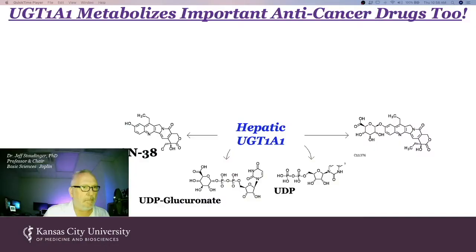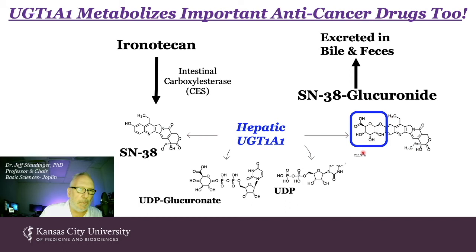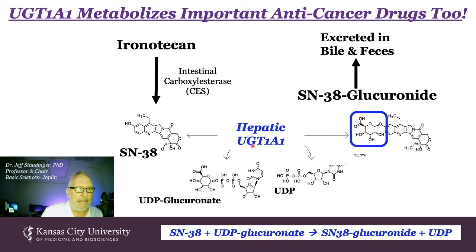UGT1A1, like most drug-metabolizing enzymes, has a broad substrate profile. It metabolizes important anti-cancer drugs in addition to bilirubin. The irinotecan prodrug is converted to SN-38, the active form, by intestinal carboxylesterase enzymes. SN-38 then serves as a substrate for hepatic UGT1A1, which adds a glucose molecule; the glucuronide is excreted in bile and feces. The drug is thus solubilized and excreted.